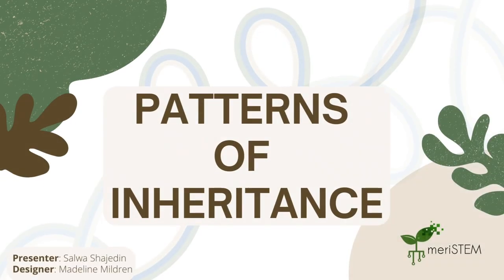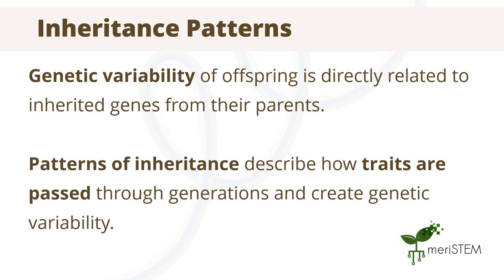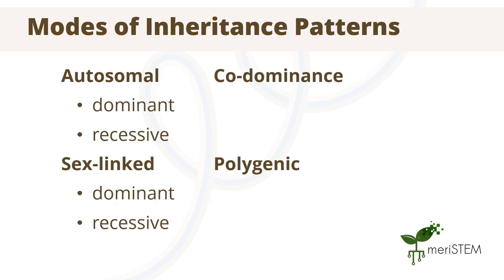Having a genetic trait is more complex than simply just inheriting a gene. There's a lot more involved, and in this video we'll have a look at this in a little bit more detail. Genetic variability within offspring occurs due to the genes that are passed on from both parents. Patterns of inheritance describes the various ways that traits are passed on from one generation to the next. The key modes we'll focus on include autosomal, sex-linked, co-dominant, and polygenic inheritance.